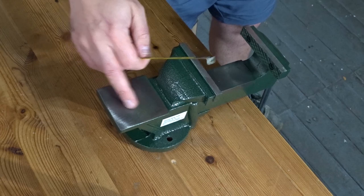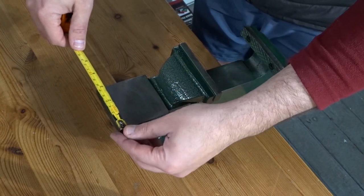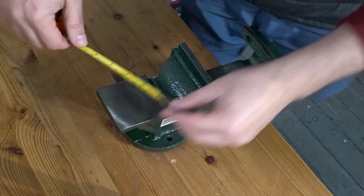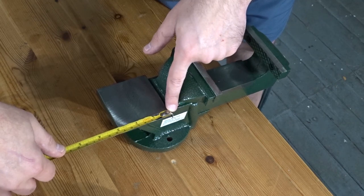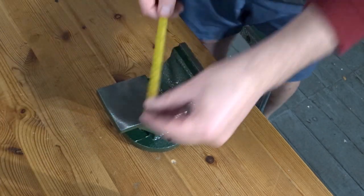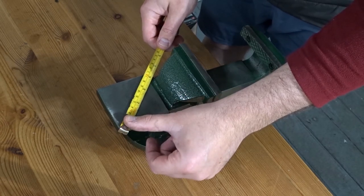And then this back anvil kind of plate here, that is around 7.5cm by about 7.5, just under 7.5. And across it is exactly 10cm.